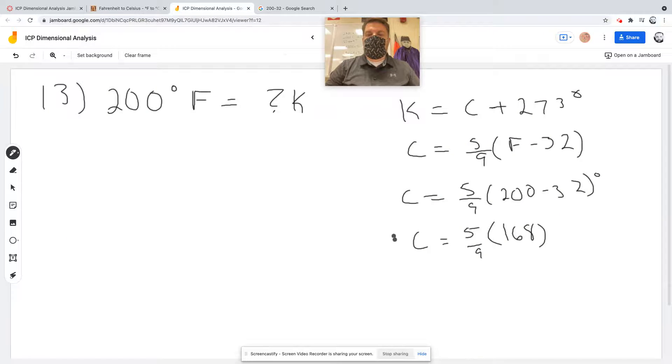So it's 93.33 repeating. So I'm just going to say that 200 degrees Fahrenheit is about 93.33 degrees Celsius.